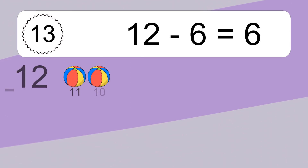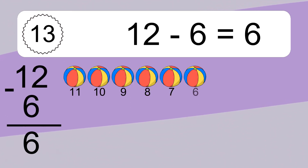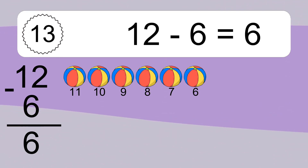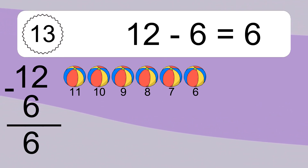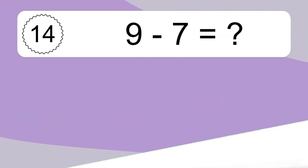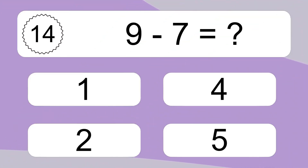Twelve minus six equals six. Let's count it: eleven, ten, nine, eight, seven, six. Nine minus seven equals what?